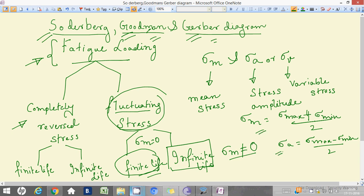Now, what is Se or sigma e? It is nothing but endurance strength — it is the limit up to which a body can sustain fluctuating stress without going to failure. We will now come to Soderberg, Goodman, and Gerber one by one.